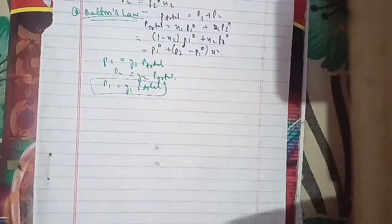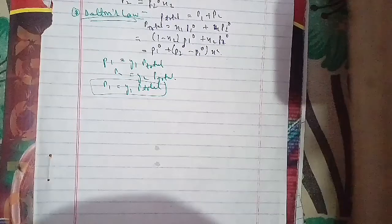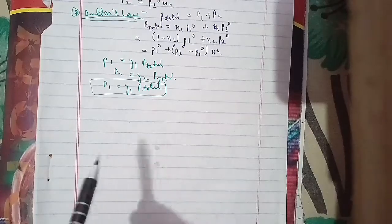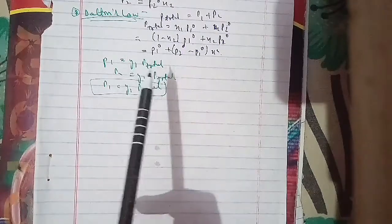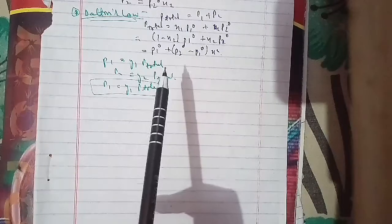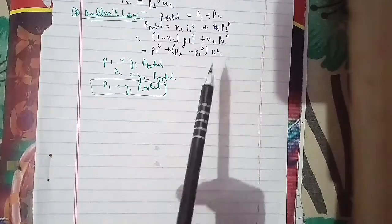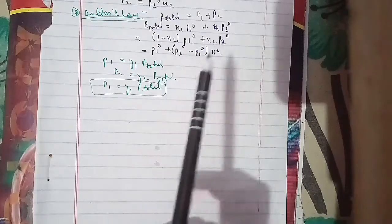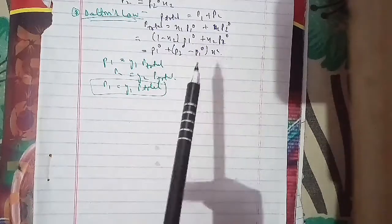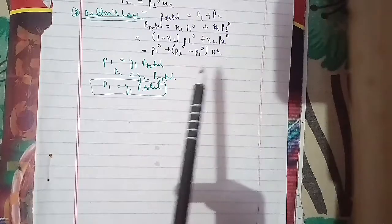Now we solve a question: The vapor pressures of chloroform (CHCl3) and dichloromethane (CH2Cl2) at 298 K are 200 mmHg and 415 mmHg respectively. We need to calculate the vapor pressure of the solution prepared by mixing 25.5 g of CHCl3 and 40 g of CH2Cl2 at 298 K, and also find the mole fractions of each component in the vapor phase.